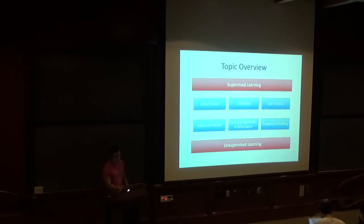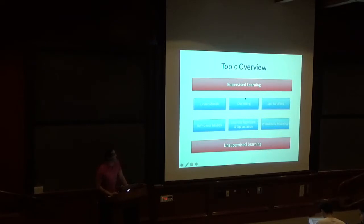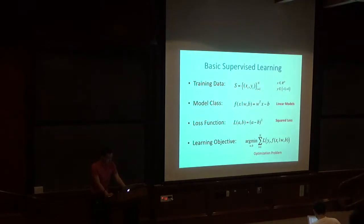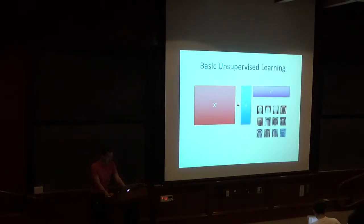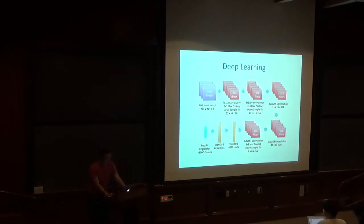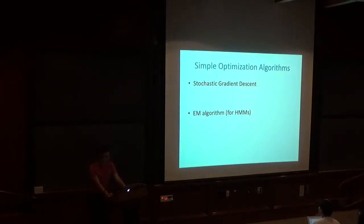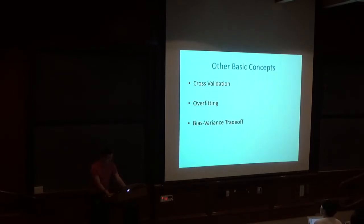This is very much a survey-style course, so we didn't go super in-depth on any particular area. Overfitting, for example, is a topic that was and still is the subject of a lot of research. How to characterize overfitting in deep neural nets is actually a really hard concept to reason about. We covered basic supervised and unsupervised learning settings, deep learning, sequence prediction, probabilistic models, simple optimization algorithms, and a few other basic concepts.